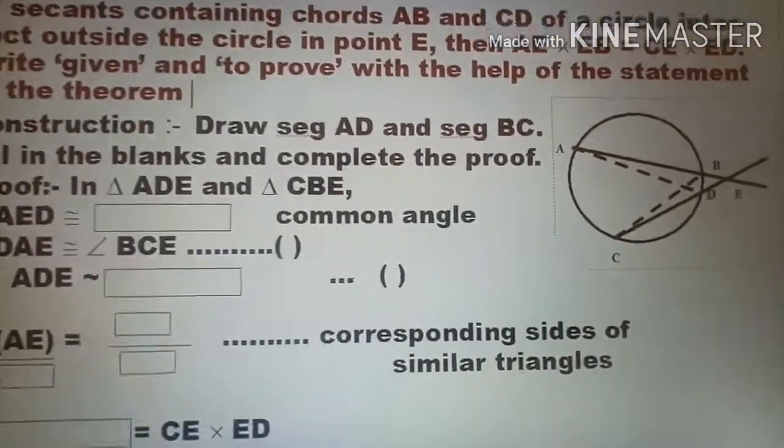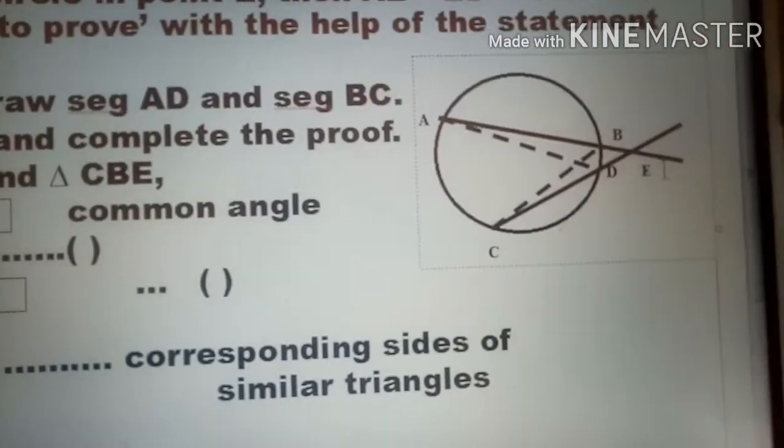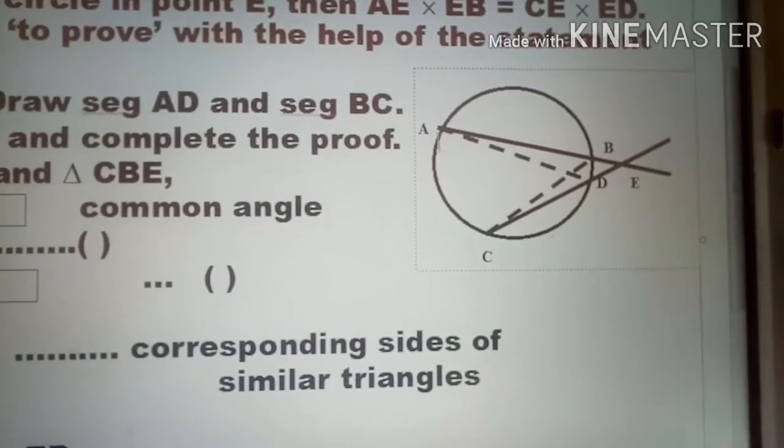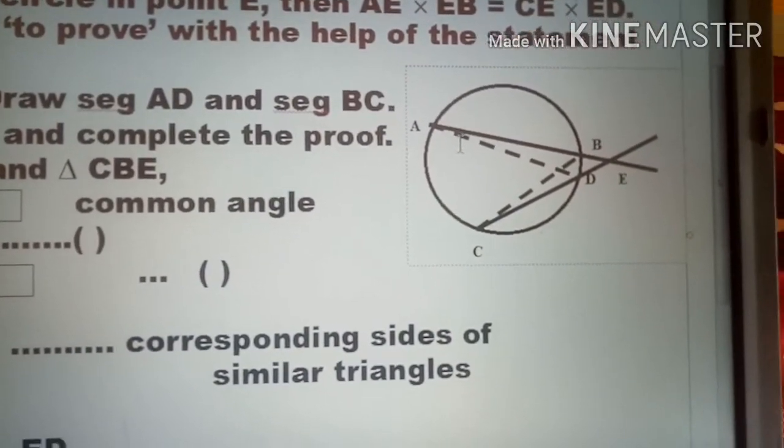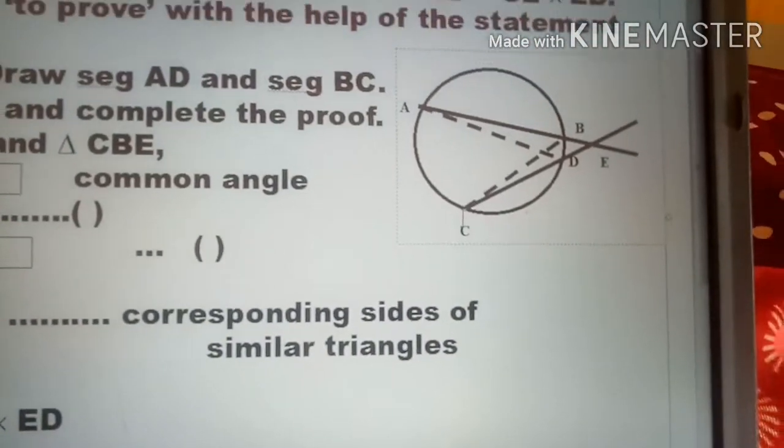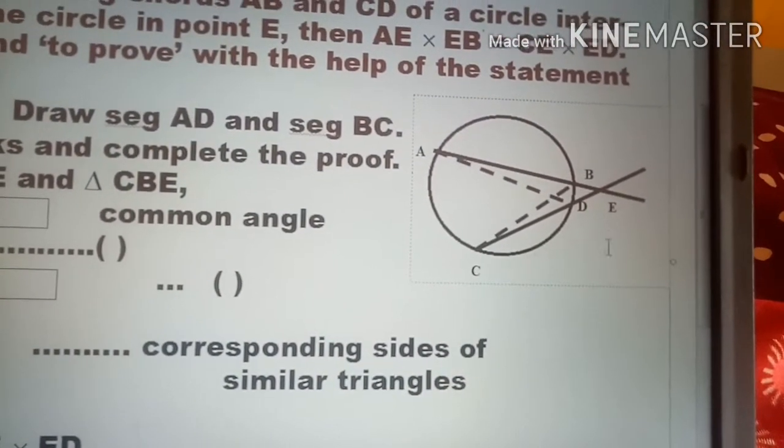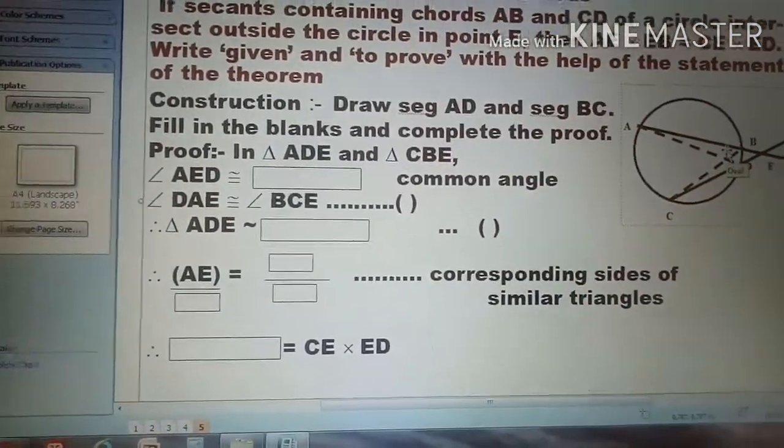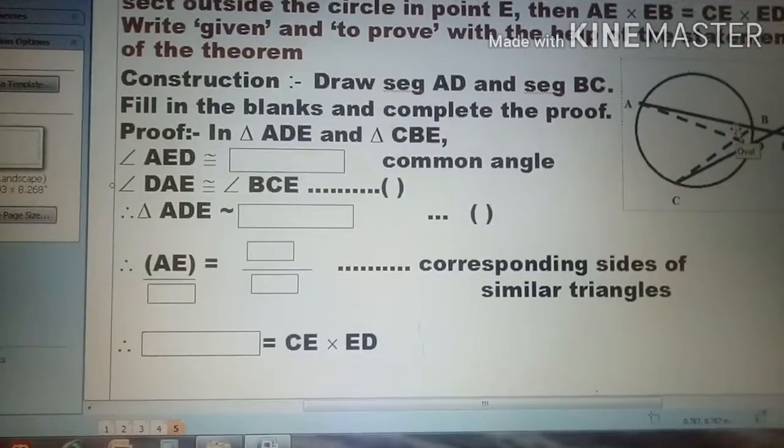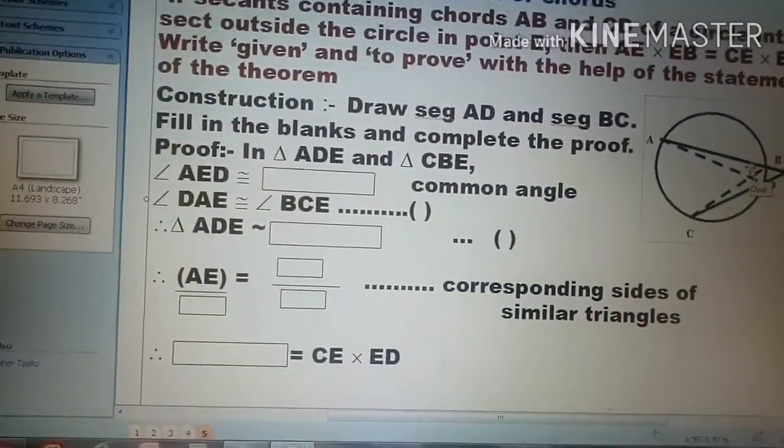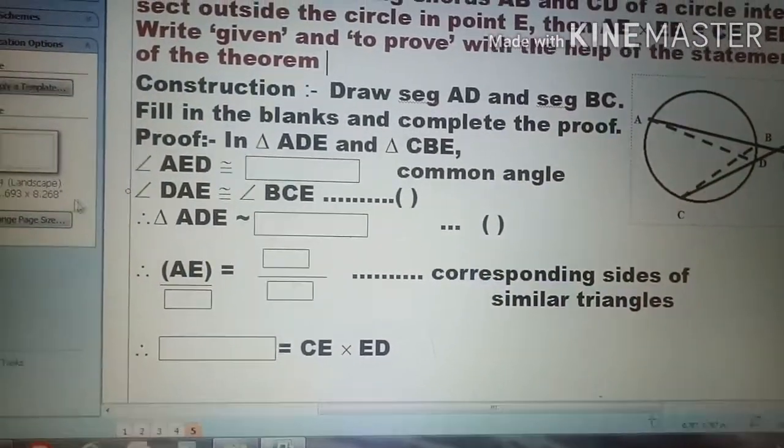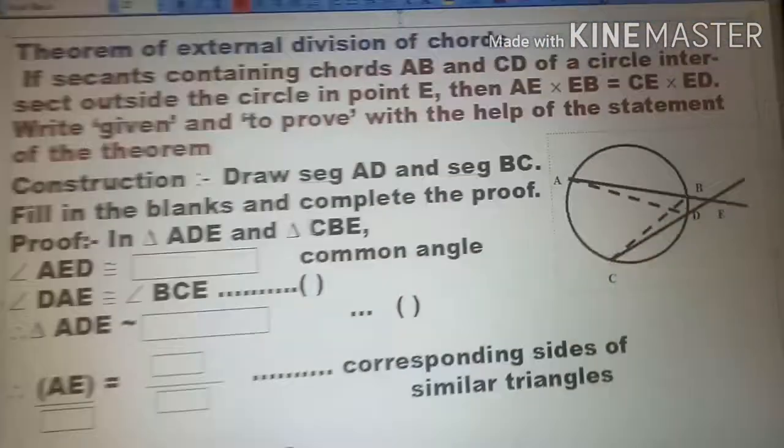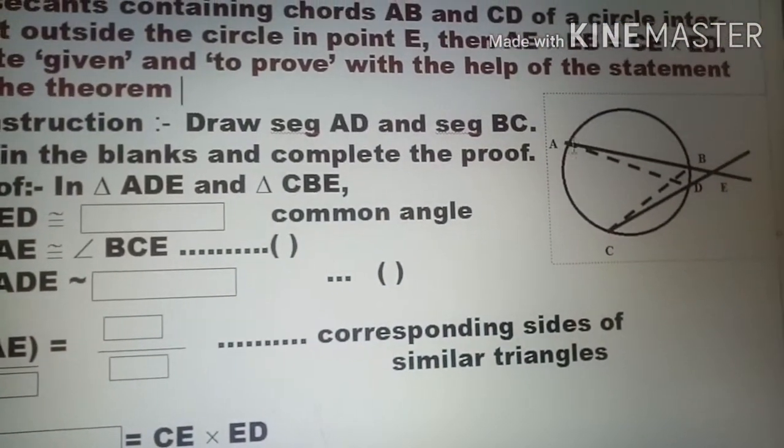After that, now we have 'fill in the blanks and complete the proof.' So in the proof, in triangle ADE you can see here easily triangle ADE, and after that another triangle CDB. These two triangles, so with the help of these two triangles we have to show what are equal in between them.